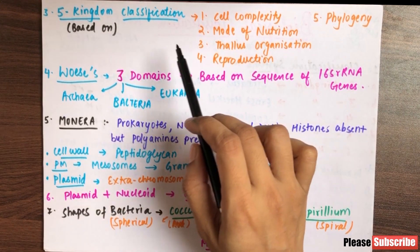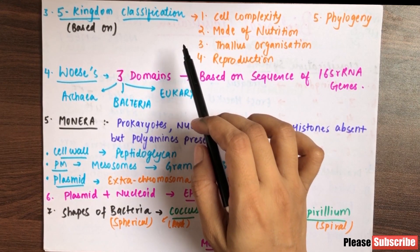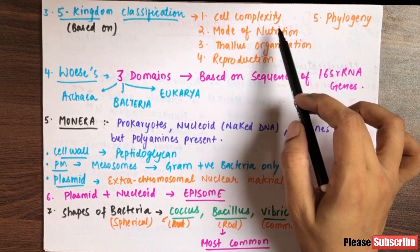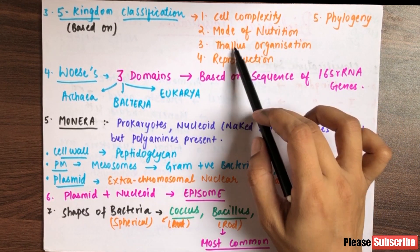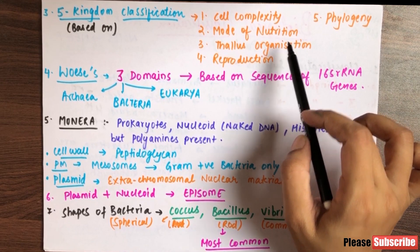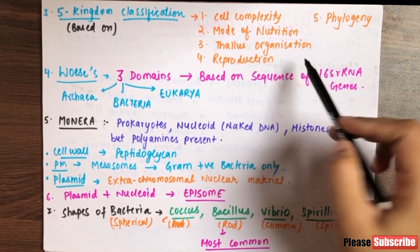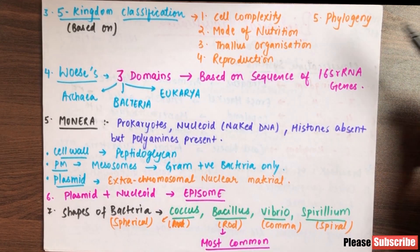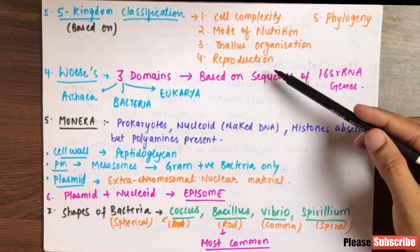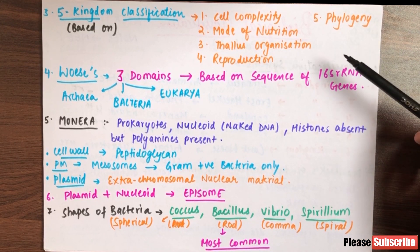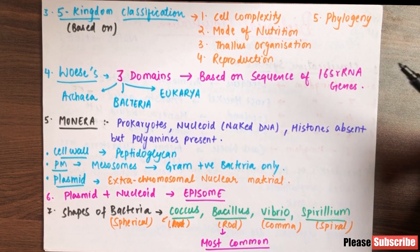The 5-kingdom classification was based on five things: first, cell complexity; second, mode of nutrition; third, thallus organization — whether the body is prokaryotic or eukaryotic; fourth, reproduction; and fifth, phylogeny. These five criteria are given in NCERT and are very, very important.